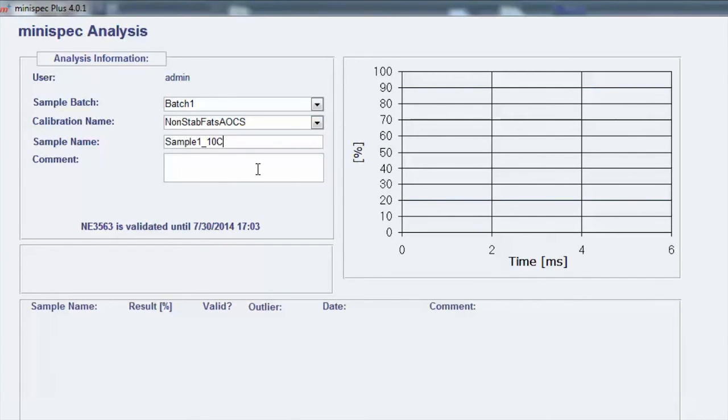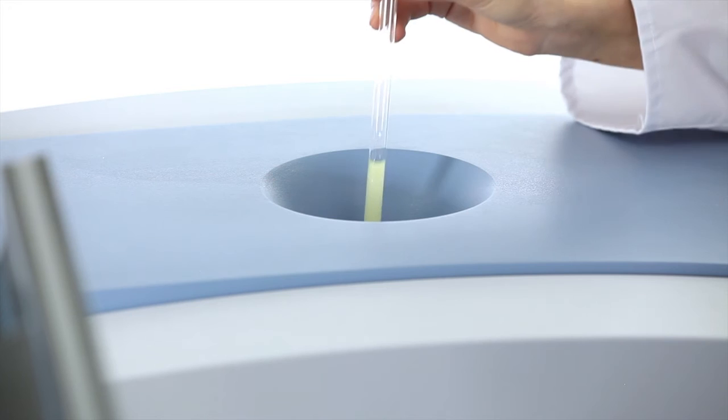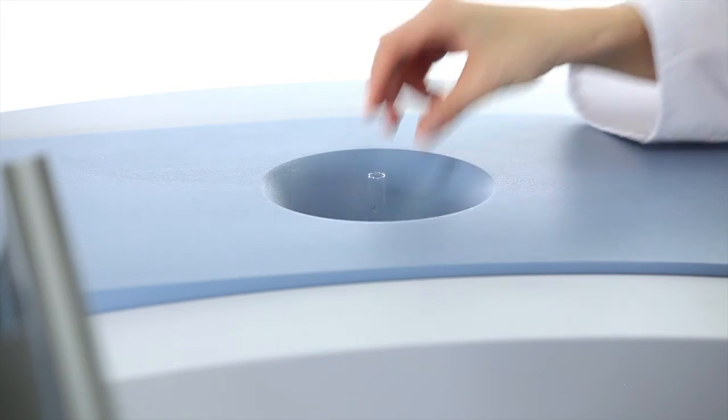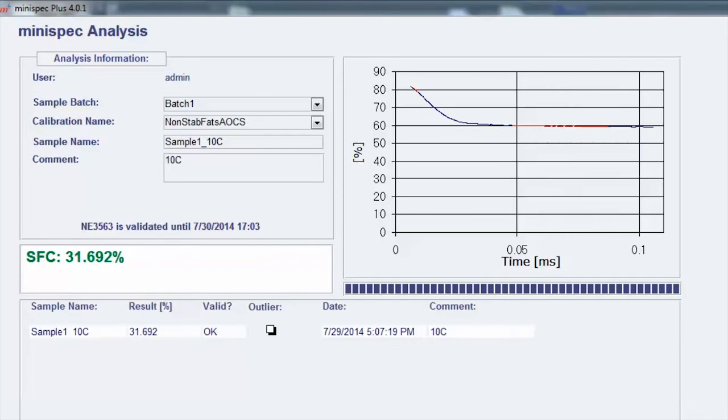The measurement itself is very fast. Insert the sample tube into the minispec. The measurement starts automatically by sample detection, and the results are shown within six seconds.